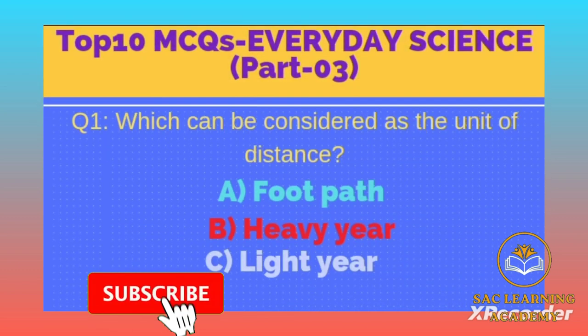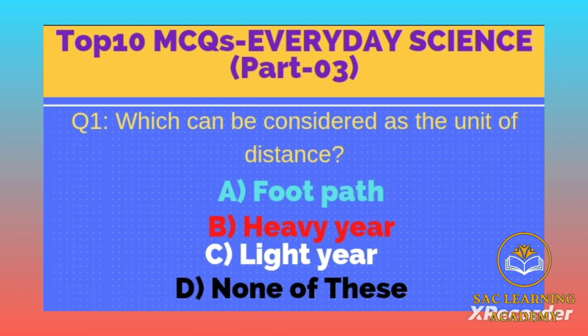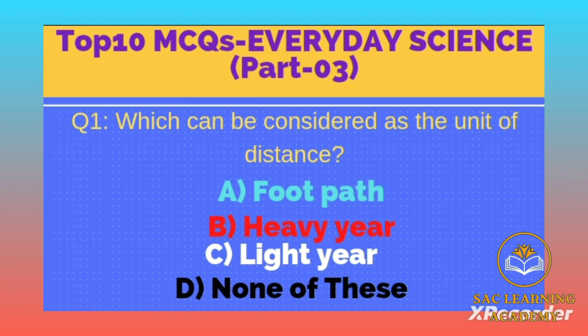Question number 1: Which can be considered as a unit of distance? Option A: footpath, B: heavy year, C: light year, D: none of these. Correct option is C, light year. A light year is the distance light travels in 1 year. Light shifts through interstellar space at 186,000 miles per second and 5.88 trillion miles per year.